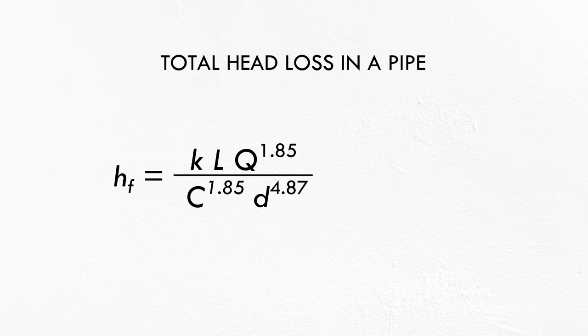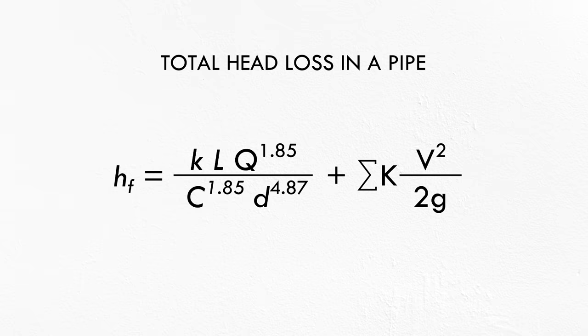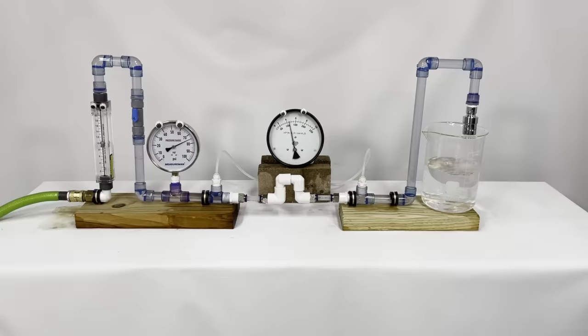Engineers have to include minor losses to the calculated frictional losses within the pipe to estimate the total head loss. In my demo here, except for the case of the 20-foot pipe, most of the pressure drop between the two measurement points is caused by minor losses through the different fittings in the manifold.